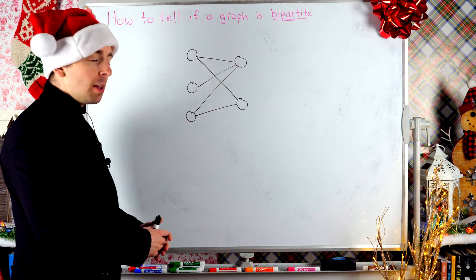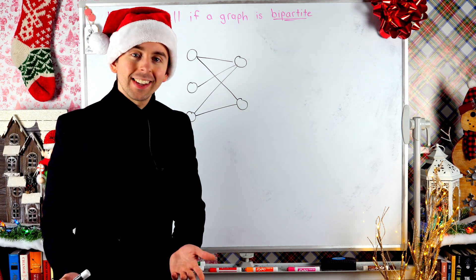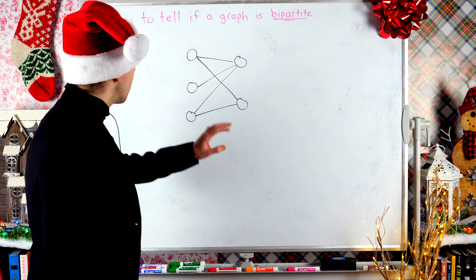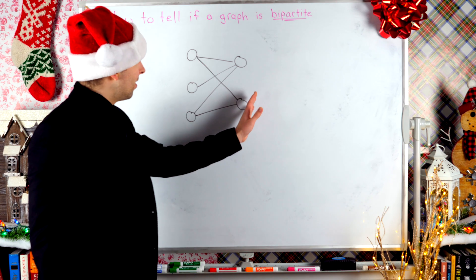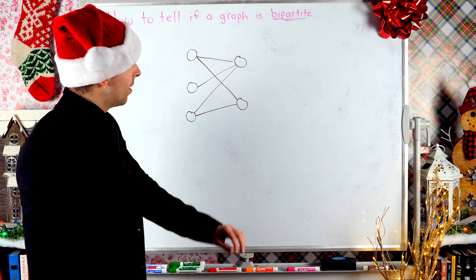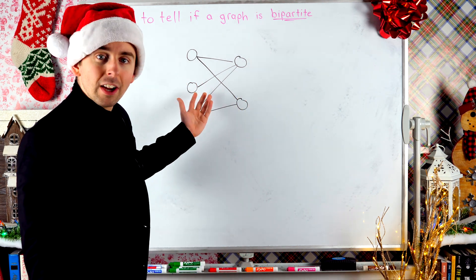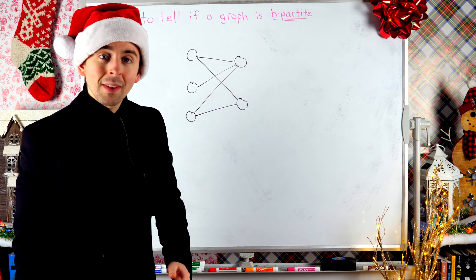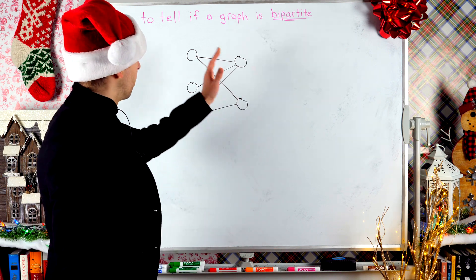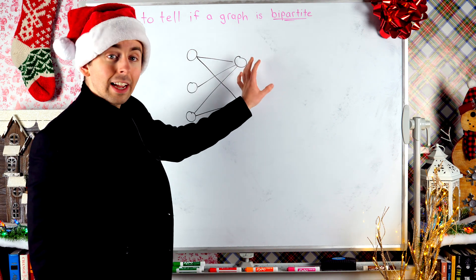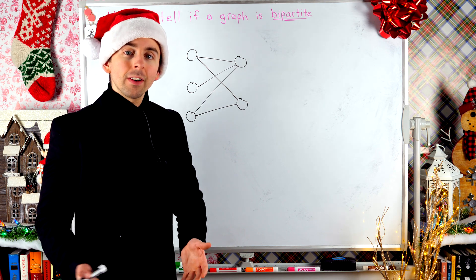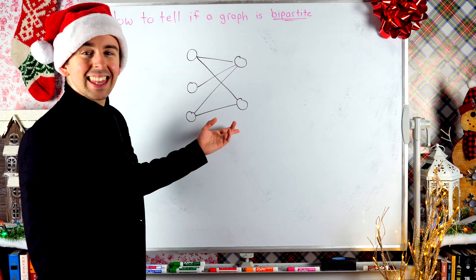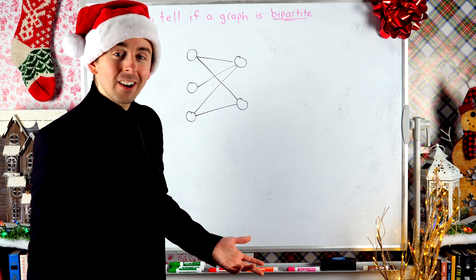Here's a graph that we can immediately tell is bipartite because its vertices have been separated into two sets — vertices on the left and vertices on the right — such that no two vertices on the left are adjacent to each other and no two vertices on the right are adjacent to each other. Every edge goes from a vertex on one side to a vertex on the other. When we know a graph is bipartite and want to draw it, we often draw it this way so it's really clear.